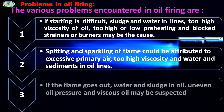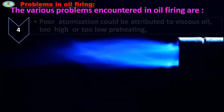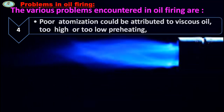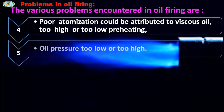If the flame goes out, water and sludge in the boiler, uneven oil pressure, and viscous oil may be suspected. Poor atomization could be attributed to viscous oil, too high or too low pre-heating, and oil pressure too low or too high.